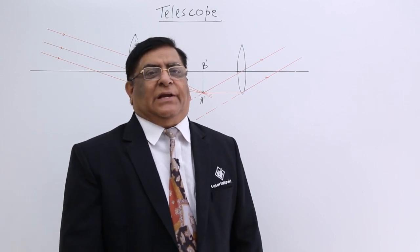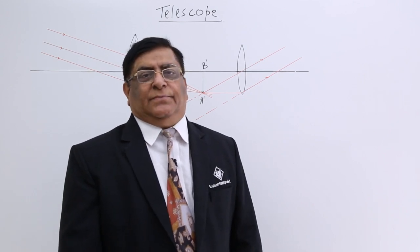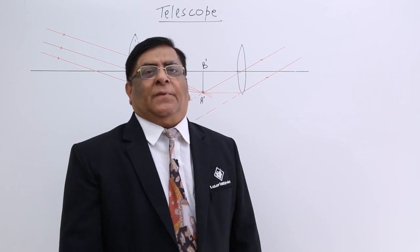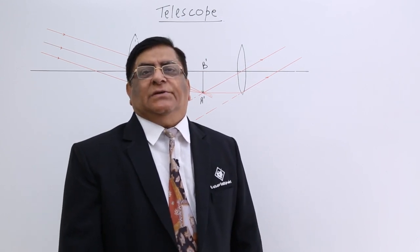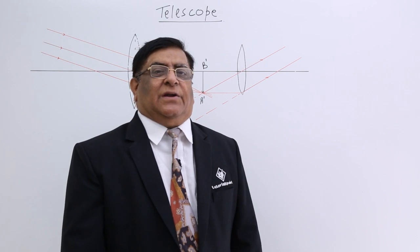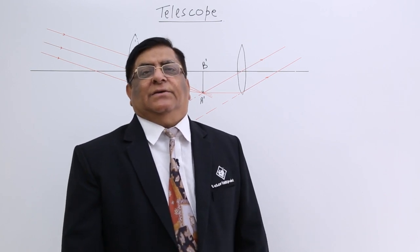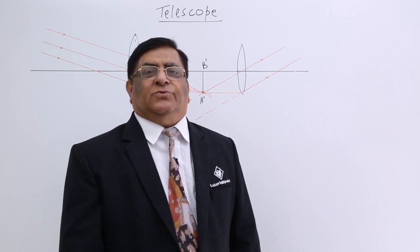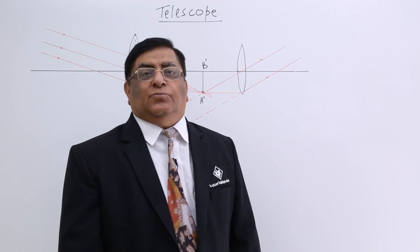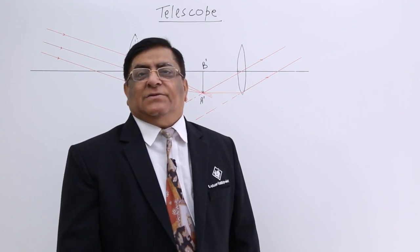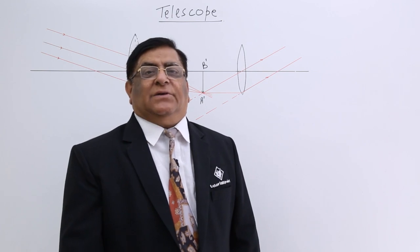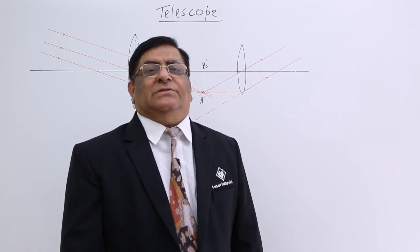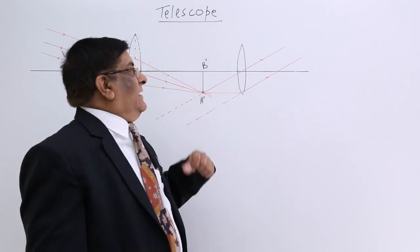Our today's topic is Telescope. A telescope is an optical device used to see objects which are at a distance. If you want to see stars, the moon, or planets — objects at such a large distance — they can be seen through this device.